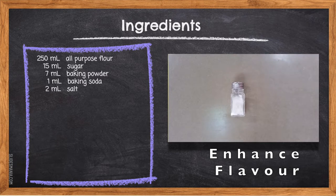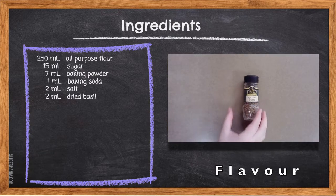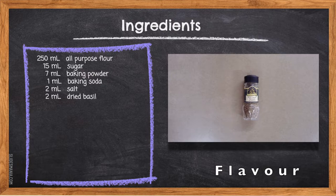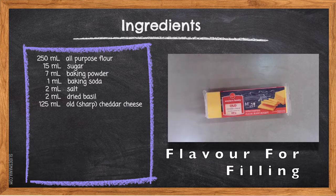Today's muffin features both green peppers and old cheddar cheese, and we want them to pop as the main dominant flavor thanks to the salt. 2 milliliters dried basil — basil is a sweet Italian herb that pairs really well with tomatoes found within our pizza sauce, and it will add more complexity to our flavor profile.